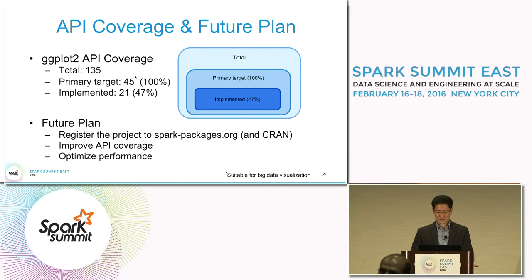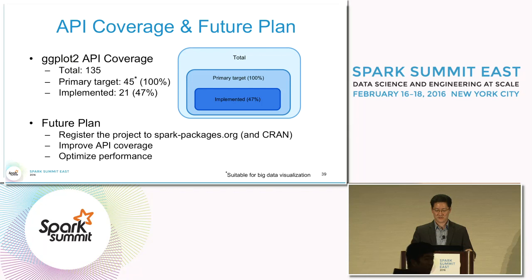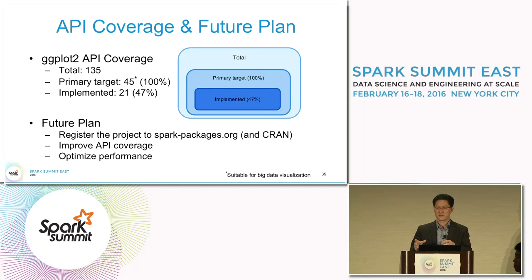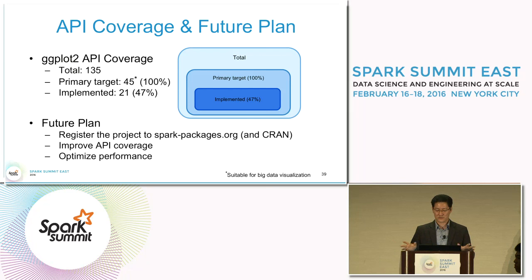Actually, that's a good point. Our initial primary target requires some sort of statistical aggregation first, so that the data can be built into a smaller size in memory. If we draw raw data—like plotting dots for whatever amount of data—those types are excluded from our initial primary target.